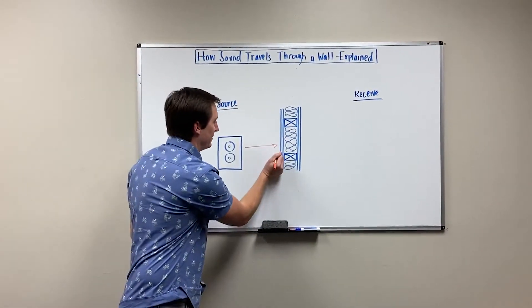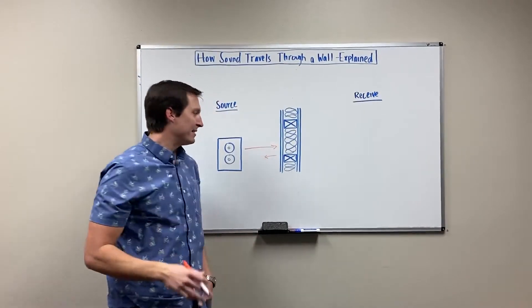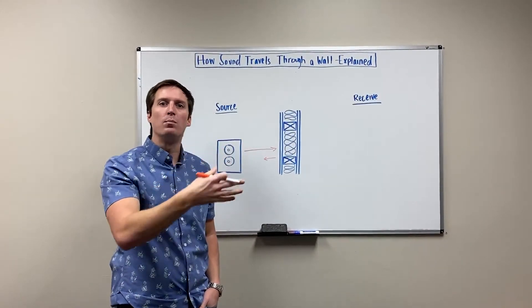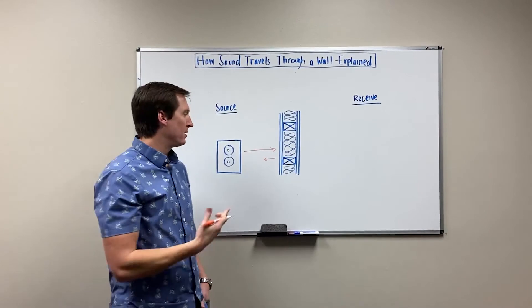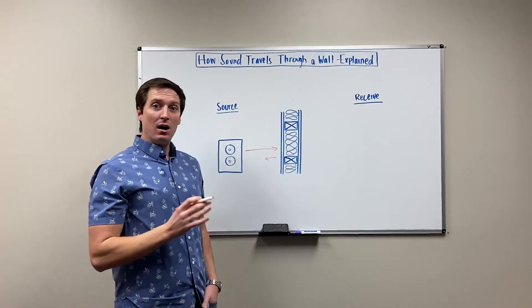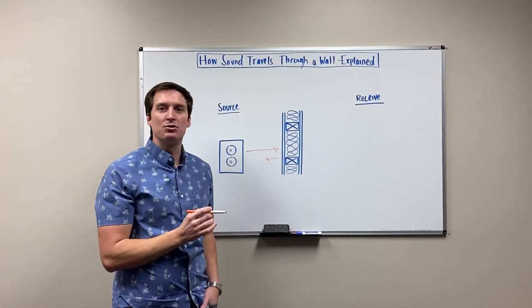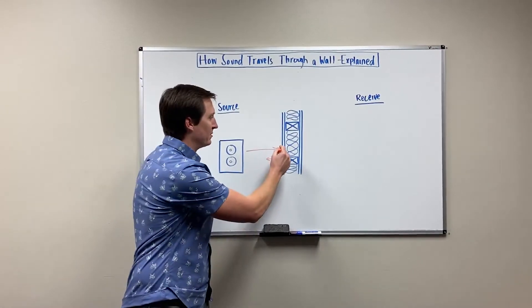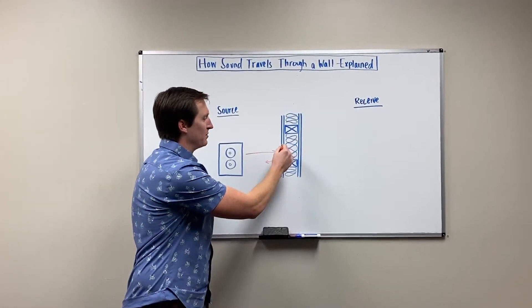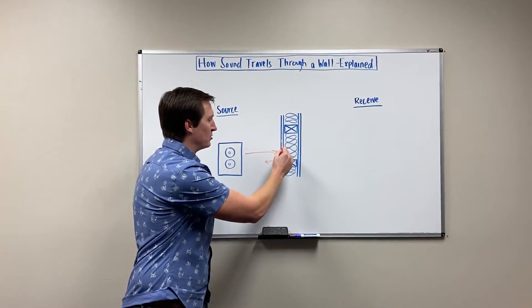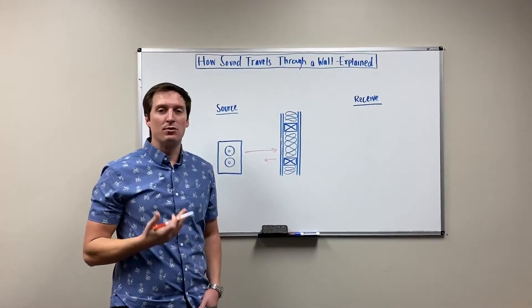The sound comes and hits the wall, and the first question is what happens with that sound. Some of it gets reflected back, less than the intensity of the sound that hits the wall, but a significant portion. Other sound turns into vibrational energy in the wall, like it hits the first layer of drywall and vibrates the wall.